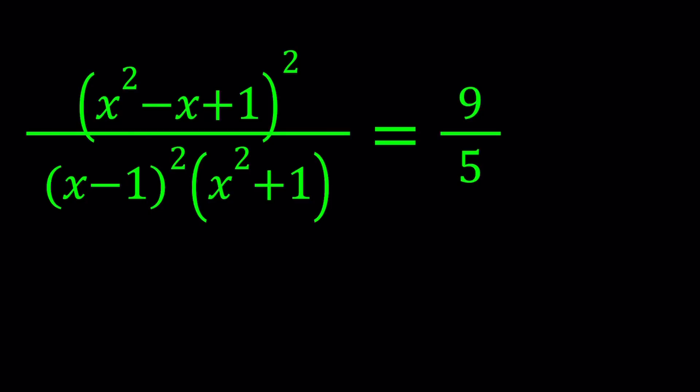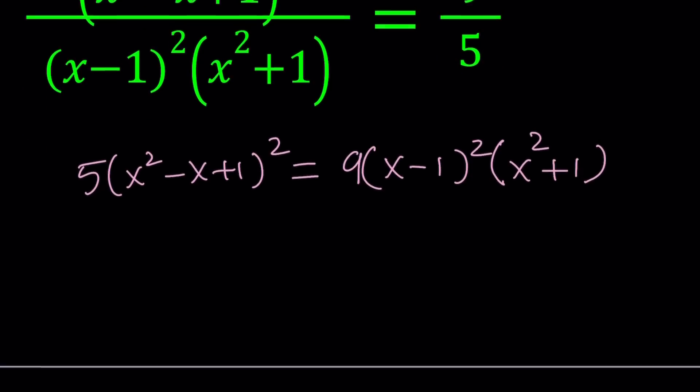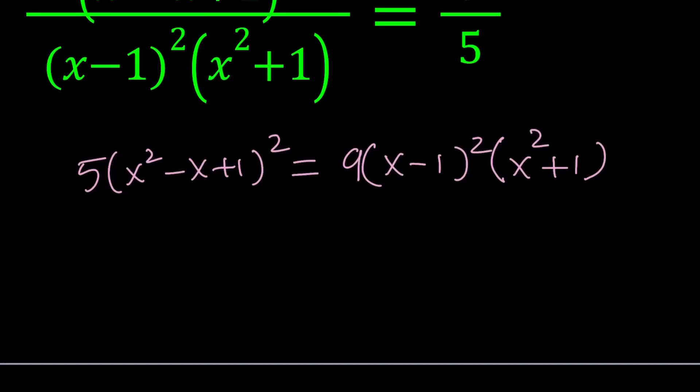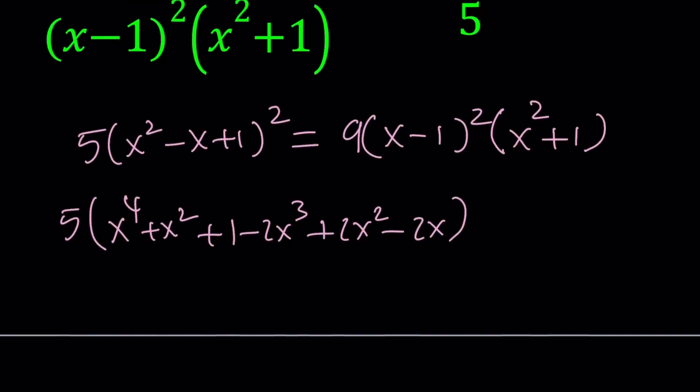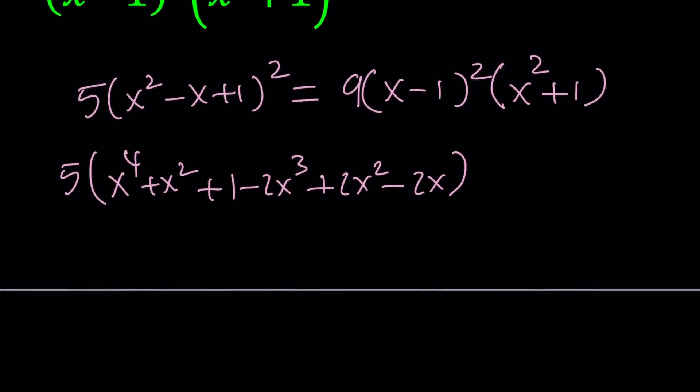I'm going to go ahead and cross multiply first. 5 times x squared minus x plus 1 squared. By the way, this is from a math competition, I don't remember which one but I think it's from Russia. Let's cross multiply first and then expand, expand, and expand. So this is going to give us, if you square, x to the fourth plus x squared plus 1, then negative 2x cubed plus 2x squared minus 2x. Let's simplify this. I can add any like terms here: 5 times x to the fourth minus 2x cubed, these two is going to give me plus 3x squared minus 2x plus 1.